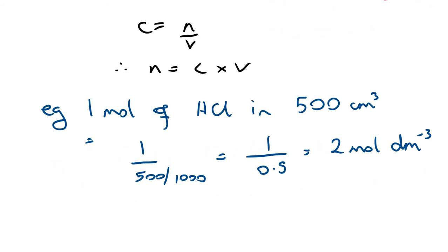The reason for those units: we have moles on top and dm³ on the bottom, so it's going to be mol dm⁻³, which is the same as writing mol × dm⁻³. For more on that, just have a look at a review of indices.